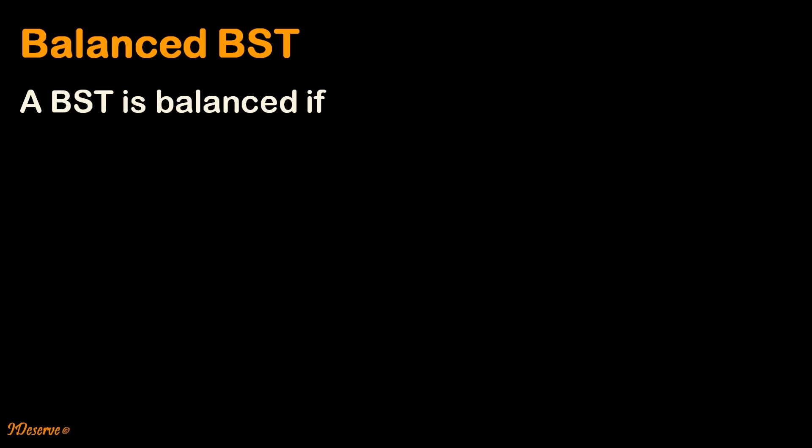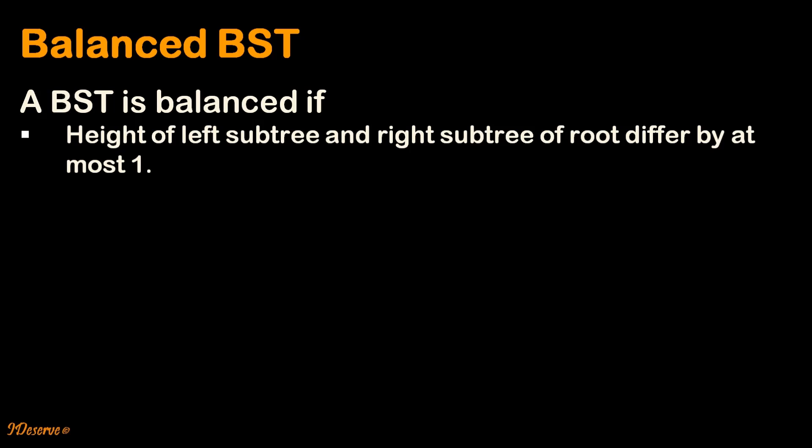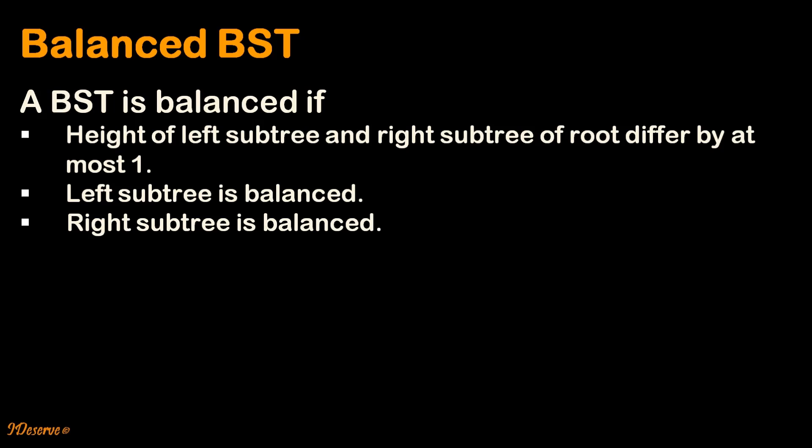Let us first understand what a balanced binary search tree is. A binary search tree is balanced if the height of the left subtree and right subtree of the root differ by at most one, and both the left subtree and right subtree are themselves balanced.